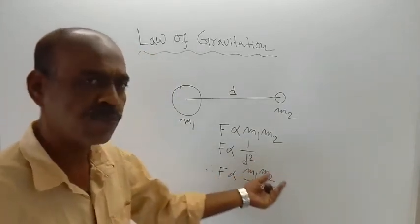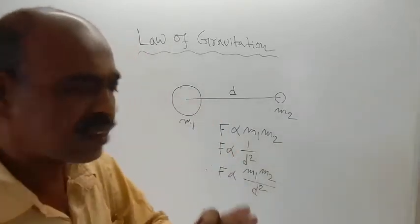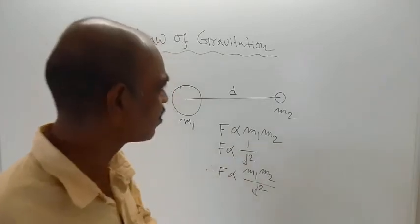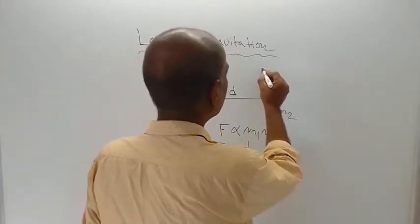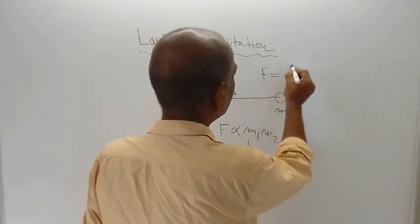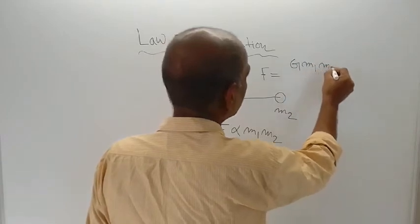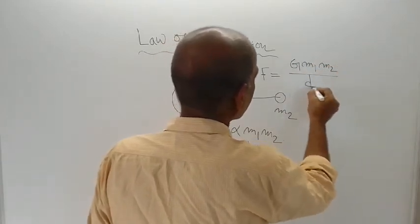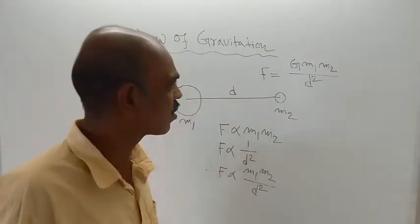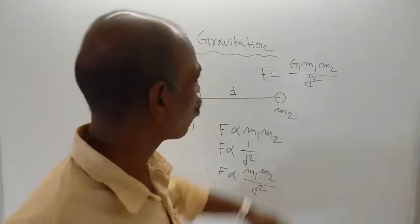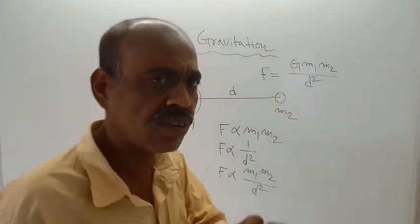F is proportional to M1 times M2 divided by D squared. Therefore, F equals a constant multiplied by this expression. That constant is denoted by capital G, so F equals G times M1 times M2 divided by D squared. G is the constant of proportionality and is called the universal gravitational constant.